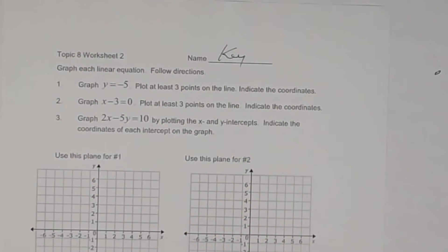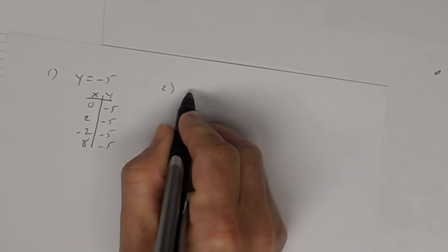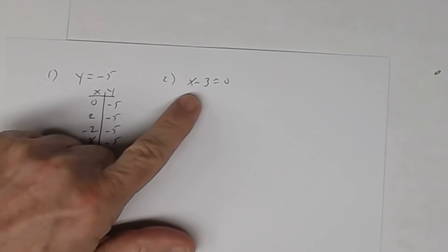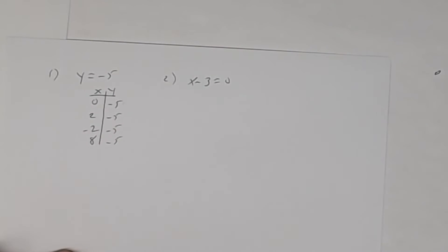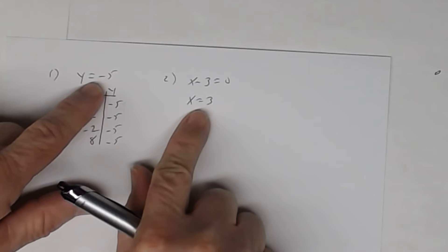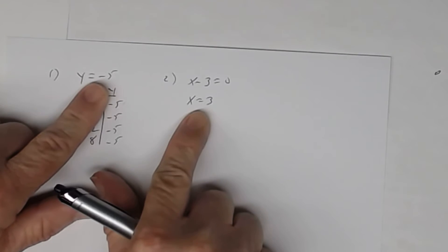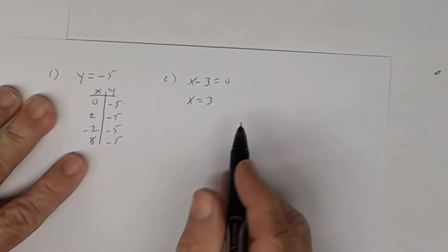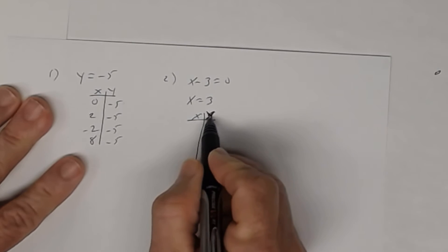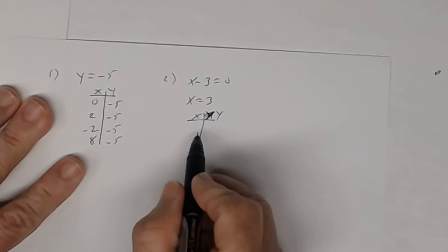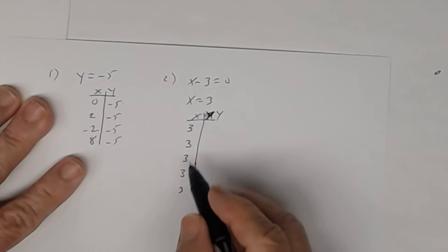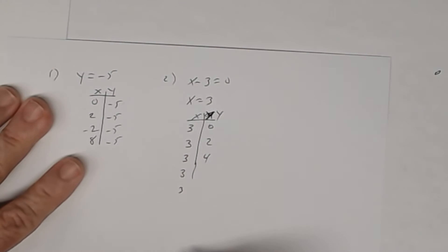So then for number 2, you have x minus 3 equals 0. When you graph that line, first of all you have to get x by itself — there's no y. When I get x by itself, I get x equals 3. So there's no y variable. Using that same idea, this says that x is always going to equal 3 — x will always equal 3, no matter what y is.